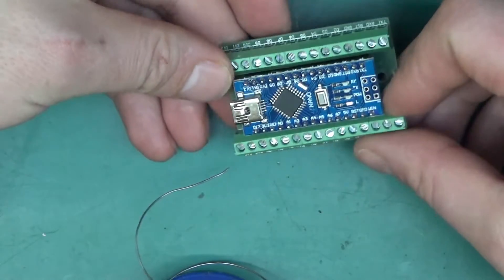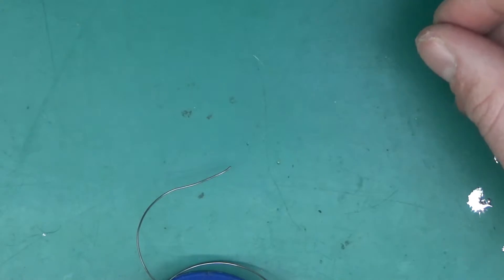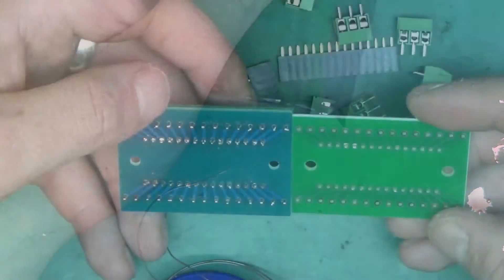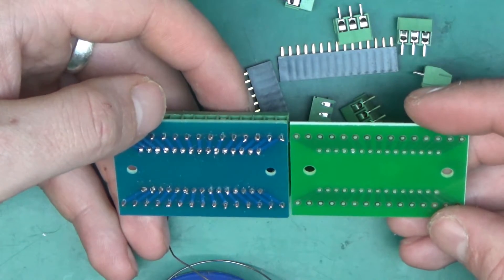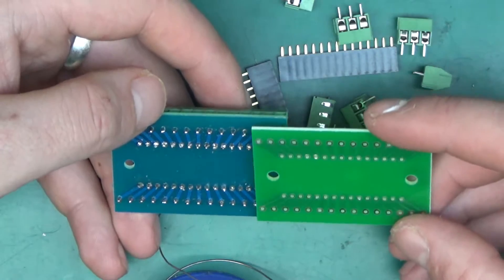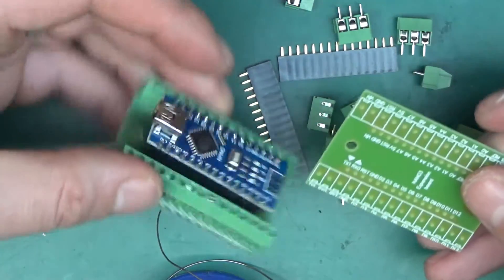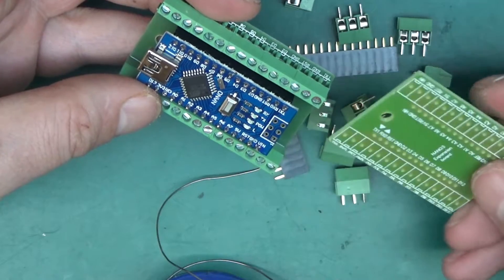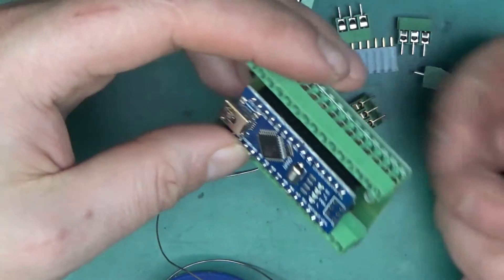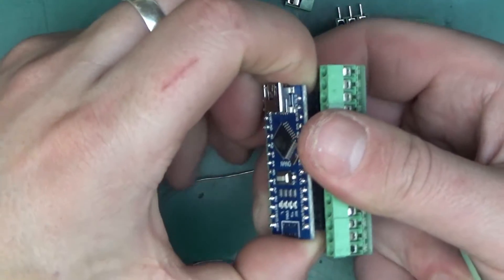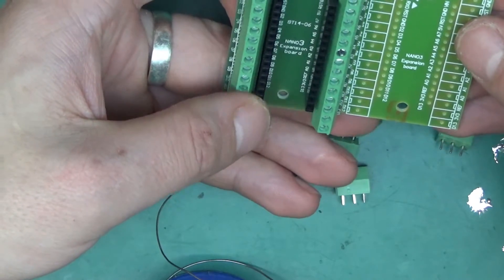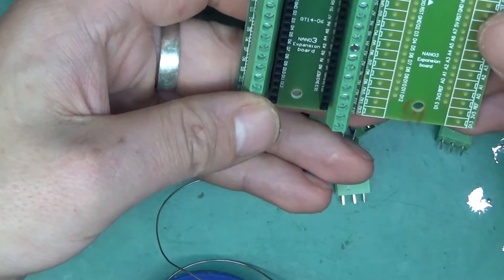Let's have a look at the second one, the one in the anti-static bag. So it's absolutely identical, the only difference is the color of the solder mask, and the holes on the blue one seem a little bit smaller. Nano 3 Expansion Board, Nano 3 Expansion Board. This one hasn't got the BT1406 printed on, but other than that...